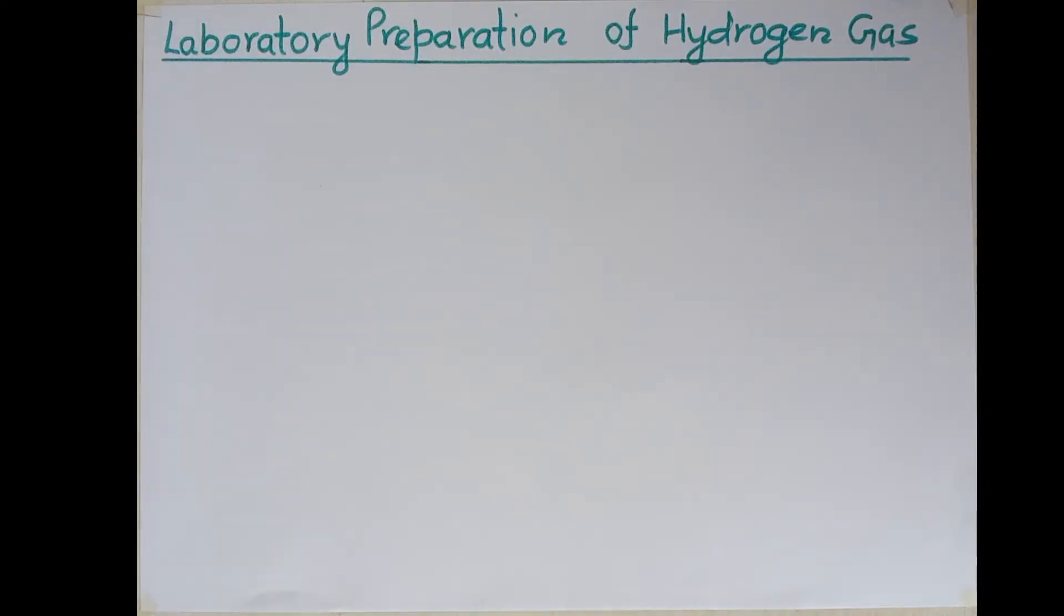I want to show you a diagram which represents the method of preparation of hydrogen gas in laboratory. How can we make it correctly?